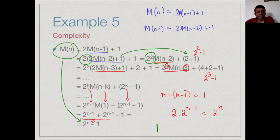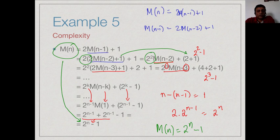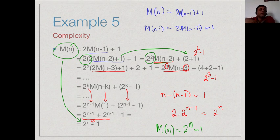It takes an exponential number of steps to solve the Towers of Hanoi puzzle. There is a famous story by Arthur C. Clarke about a temple with 64 such disks, saying the world will end when they are all transferred. Since 2 to the 30 is about 1 billion, 2 to the 64 is an enormous number of steps — so this is not a practically solvable problem.